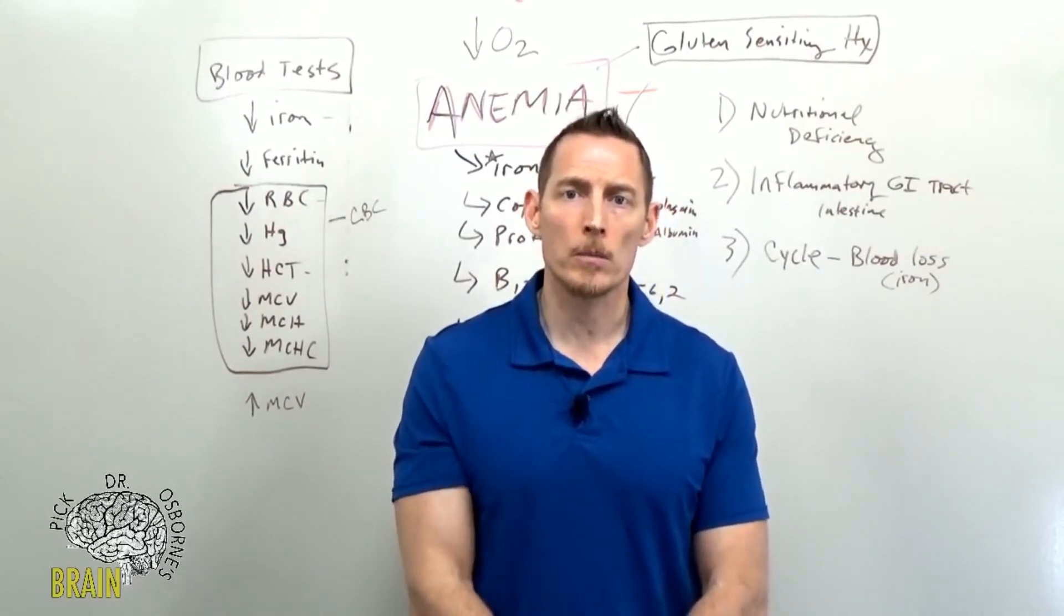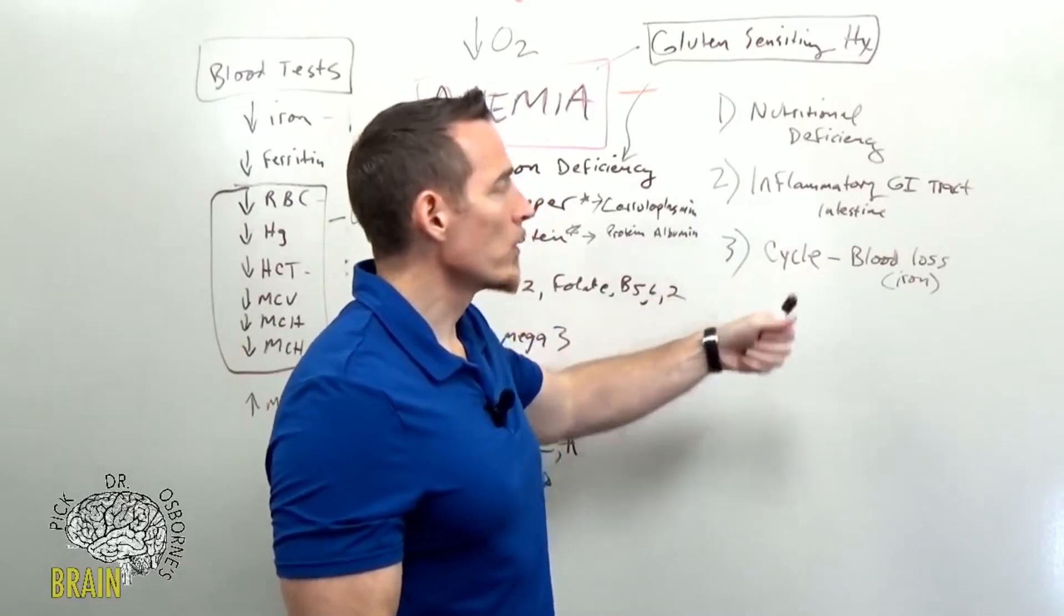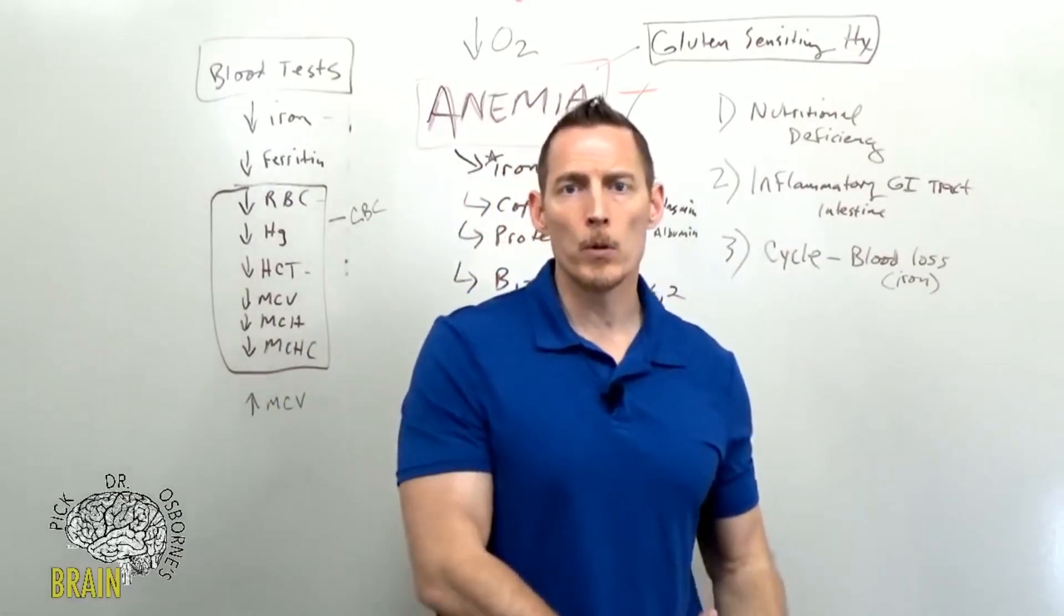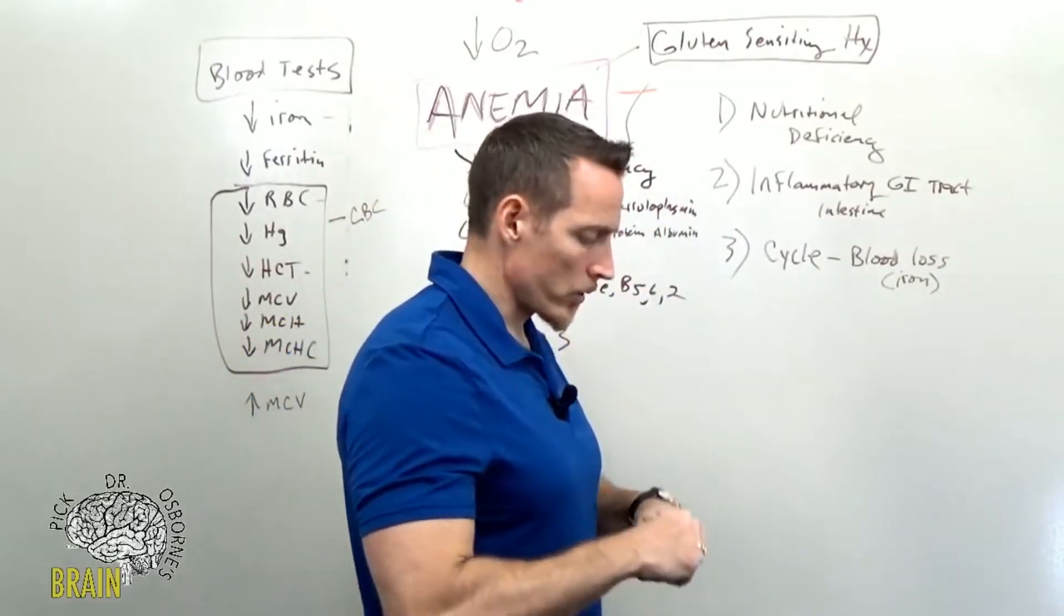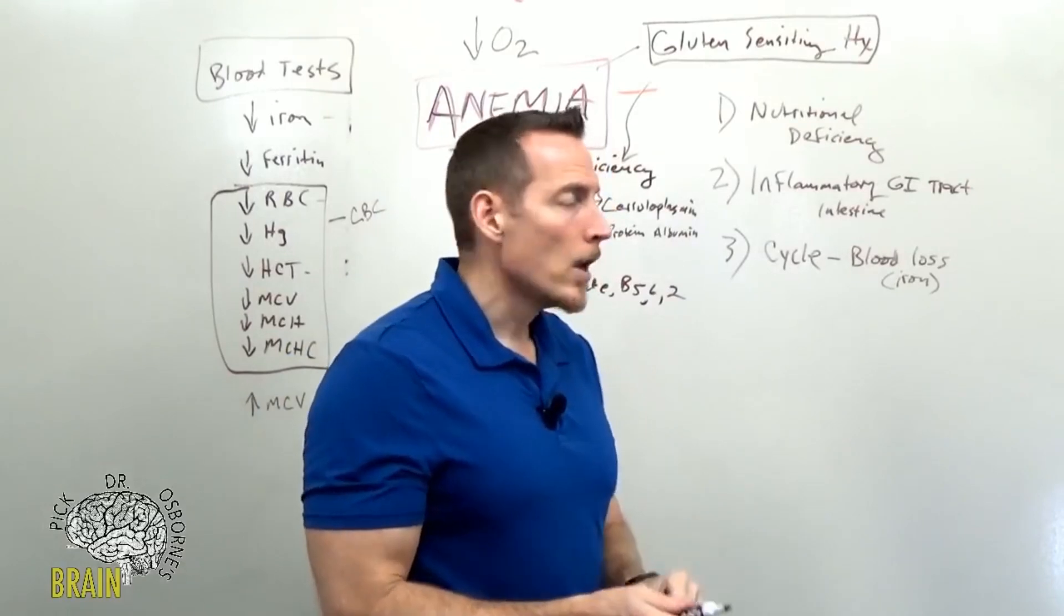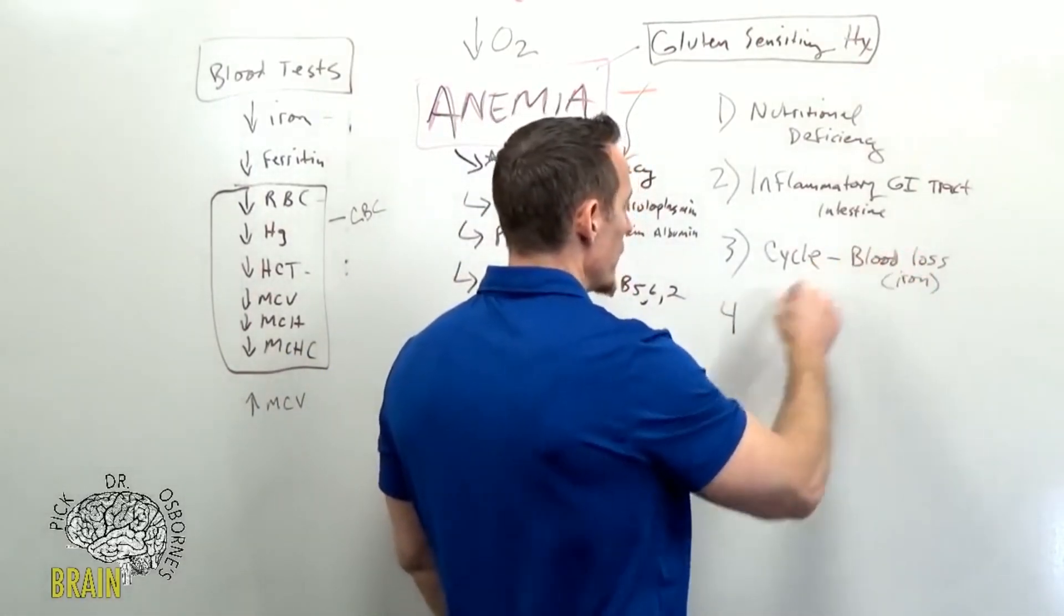These things are generally transient because if your bone marrow is working right, you're going to reproduce new red blood cells to take the place of the ones that were lost as a result of that blood loss.